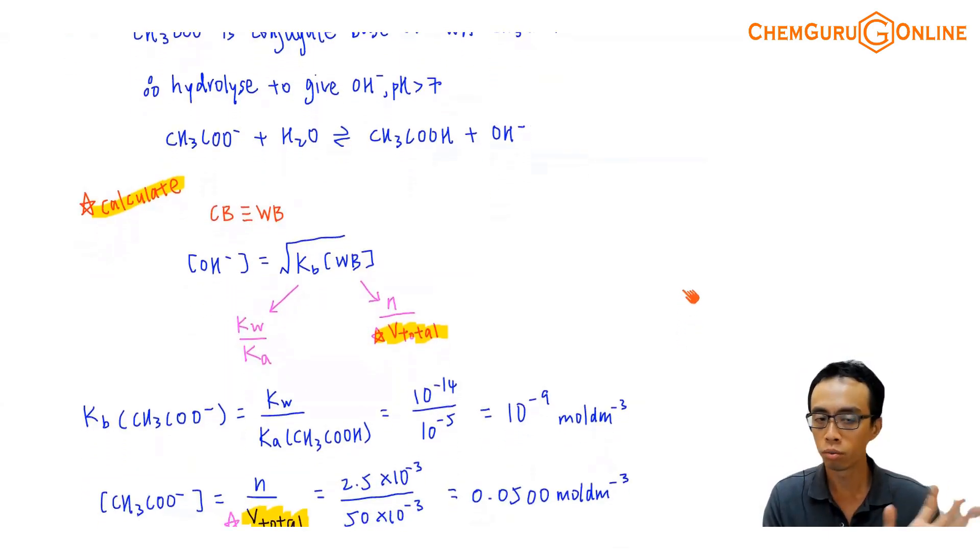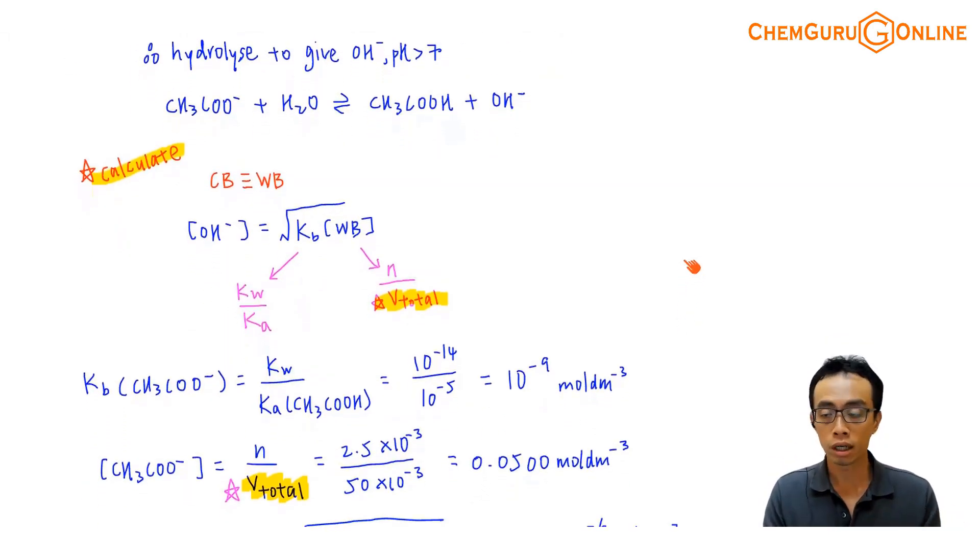I don't have KB value, no problem, because I'm given the KA of the partner, so I can always use KW divided by KA. I can work out the KB value. KW is 10 to the power of minus 14. KA is given in the exercise, 10 to the power of minus 5, so KB will be 10 to the power of minus 9. Again, a very nice number, but if we're given actual values, we will do by the same number of steps, exactly the same. So usually shouldn't be that much of a problem for us to find KB.